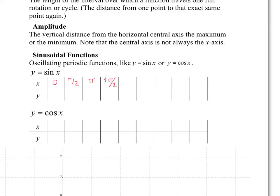We're going to come back to 2 pi. When x equals 0, sine of 0 is 0. I'll stay with red so we can compare cosine and sine. When x is pi over 2, sine of pi over 2 is 1 — think of a unit circle. Sine of pi is 0. Sine of 3 pi over 2 is negative 1. And we're right back at 0.